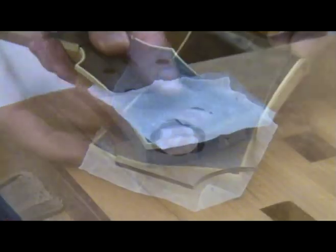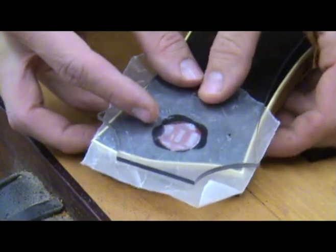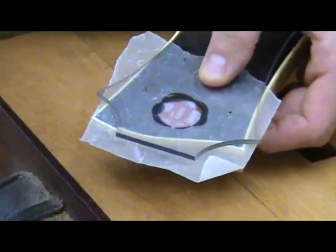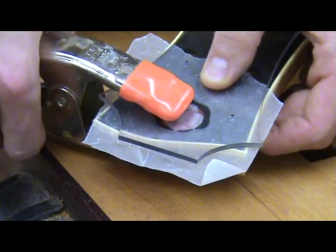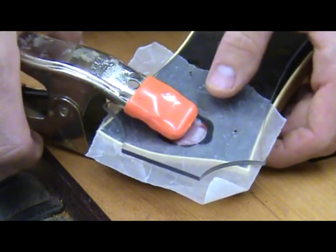Then place a piece of wax paper over it and clamp something flat on top of that. If you use something clear like what I'm using, you can see all the action underneath. Let the epoxy cure for the appropriate amount of time.